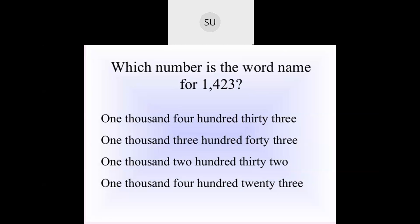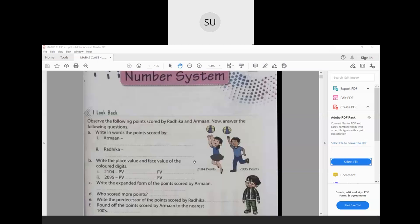So this is basically what you will have learned about numbers in 3rd standard. Now what we will do is look at a few revision questions from your textbook on page 1 — that is 'I look back'. The first question: observe the following points scored by Radhika and Arman, then answer the following questions.